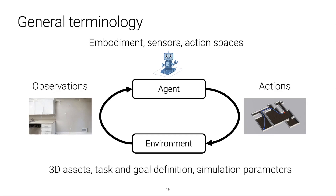On the environment side of the reinforcement learning loop, we'll discuss the 3D assets used to create environments, the definition of various tasks and goals within those tasks that an agent might have, and also manipulating important simulation parameters that determine what kinds of observations are available to agents. Hopefully this general terminology will make it easier to connect the different parts of the tutorial.